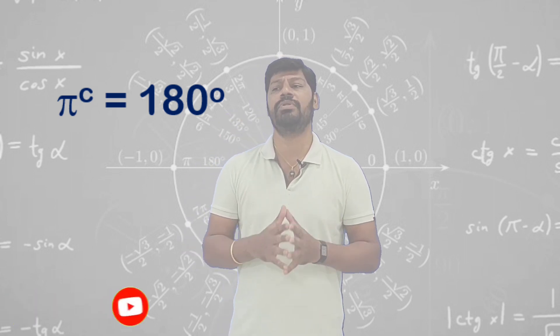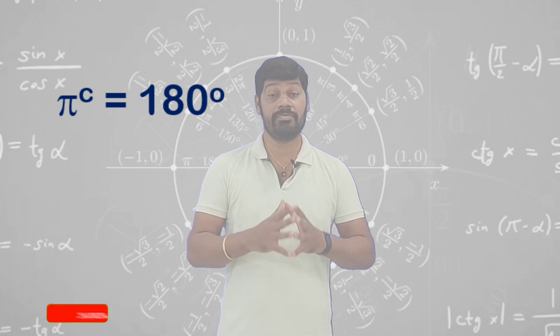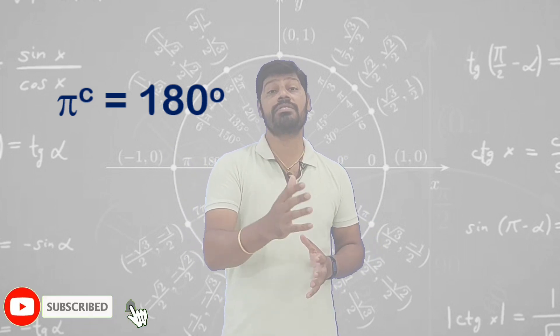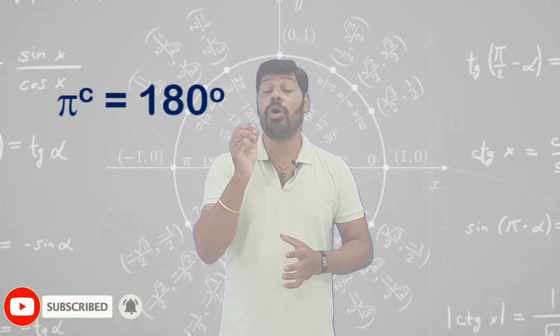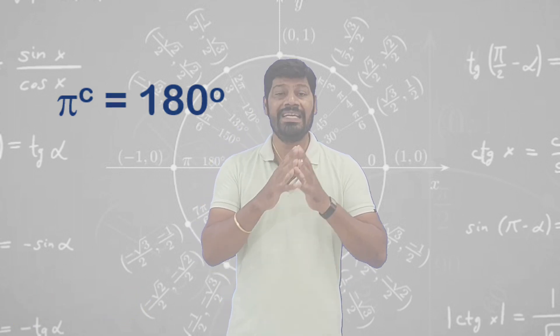People used to understand or assume that pi is nothing but 180 degrees. But here the question is, how does pi radians equal 180 degrees and what is the word radians here?